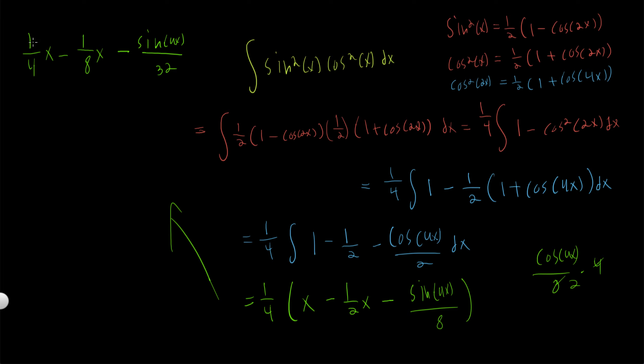This is two-eighths x minus one-eighth x, so that's just one-eighth x. So one-eighth x minus sine of 4x over 32, and this right here is our answer.